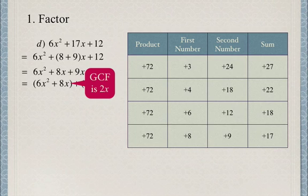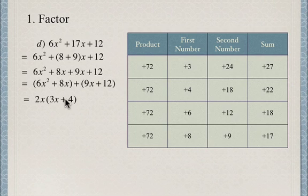We factor out 2x: 2x(3x + 4). This works because 2x times 3x equals 6x², and 2x times 4 equals 8x. We've simply factored out the greatest common factor.